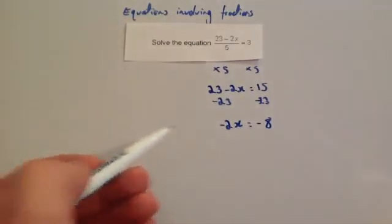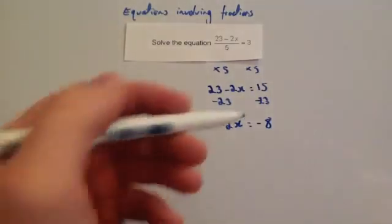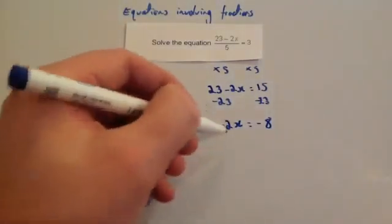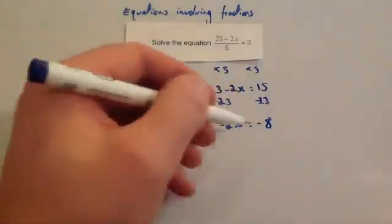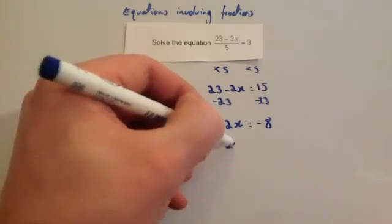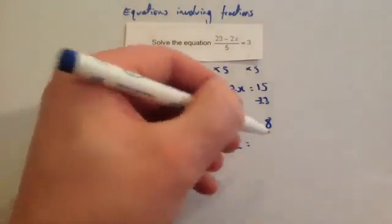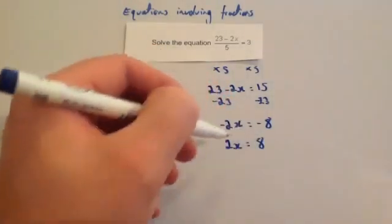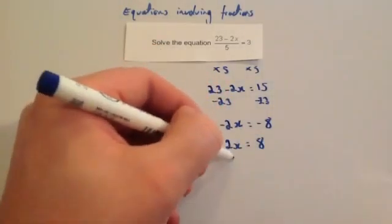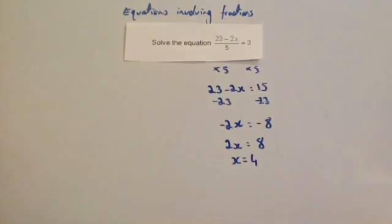Times the whole thing through by minus 1 — that changes the signs — so you're going to get 2x equals 8, and divide by 2 gives you x equals 4.